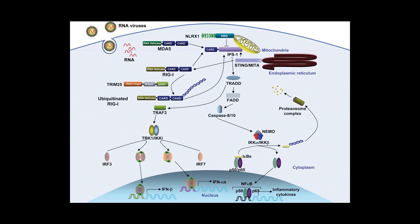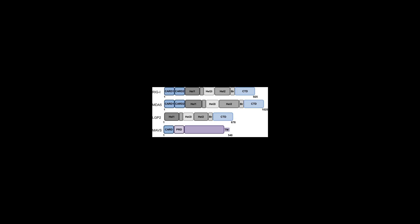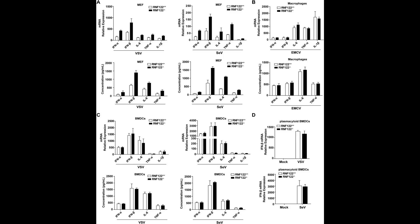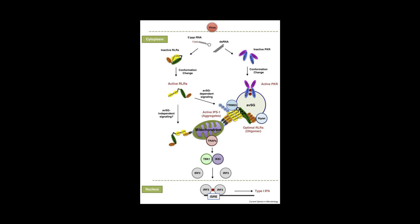TRADD, TRAF3, and RIP-1 activate NEMO and IKKs, which activate IKK complexes to induce IRF-3, IRF-7, and the NF-kappa-B pathway.